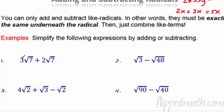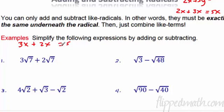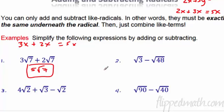Number 1: 3 radical 7 plus 2 radical 7. That is very similar to 3x plus 2x, where x is radical 7. We would just add the coefficients — that would be 5 radical 7. Done! Are you serious? I am Billy Ray serious.